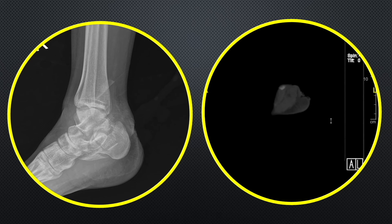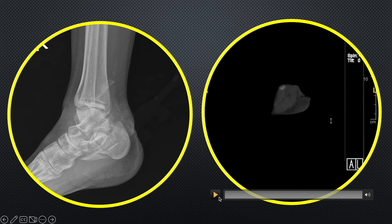This was the pre-operative radiograph of this patient. You see there is a comminuted fracture of the calcaneum, but the picture is not clear. Usually getting a good lateral or axial view in these cases is difficult and troublesome for the patient. Therefore we directly order CT images because they provide a better picture and details for surgical planning.